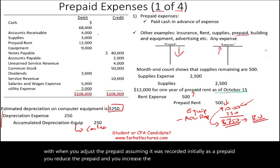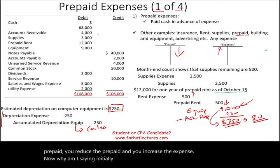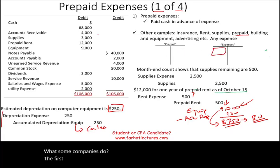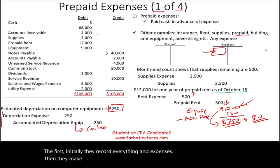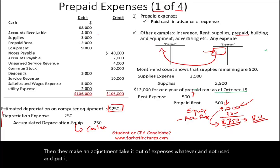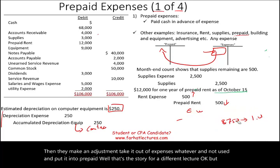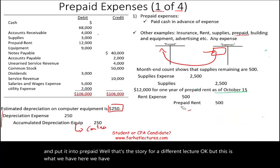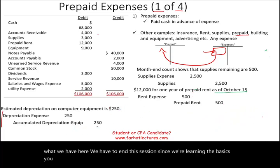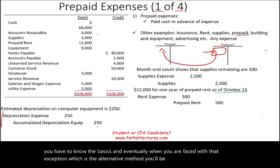It's important to note I'm saying 'assuming it was recorded initially as a prepaid,' because some companies initially record everything as an expense, then make an adjustment to move the unused portion into prepaid. That's the alternative method — a story for a different lecture. In this session, since we're learning the basics, you need to know the standard approach first, and eventually when faced with the alternative method, you'll be able to handle it.